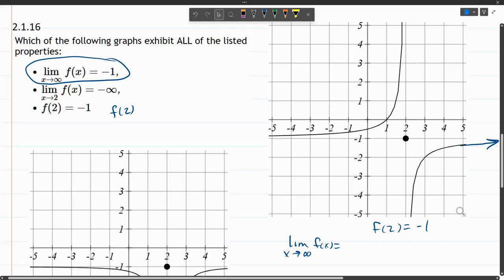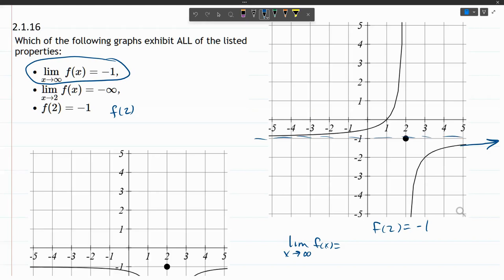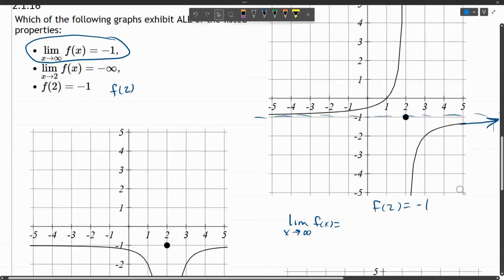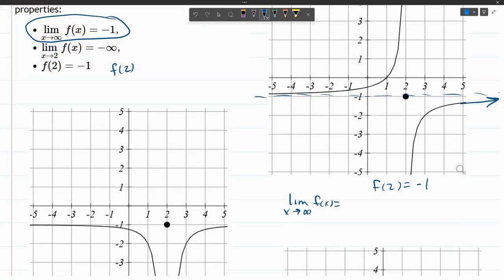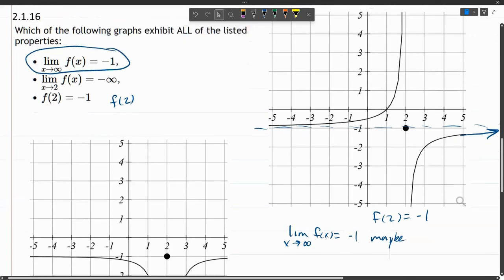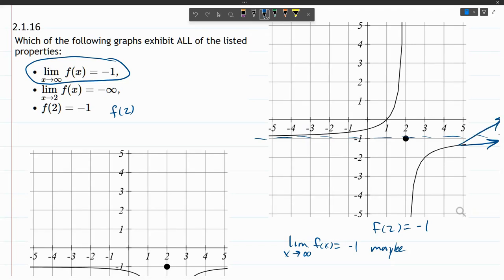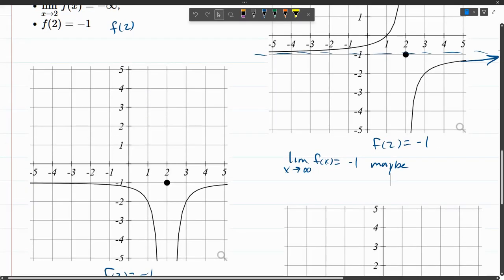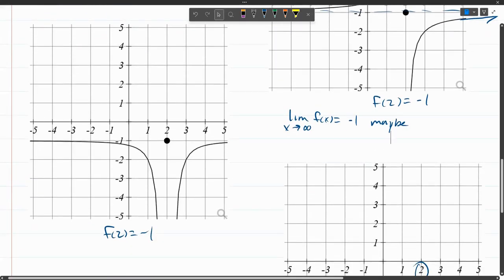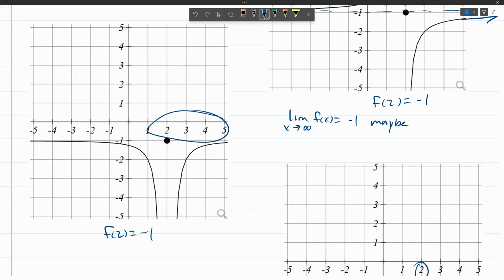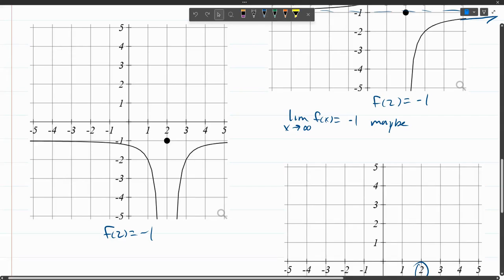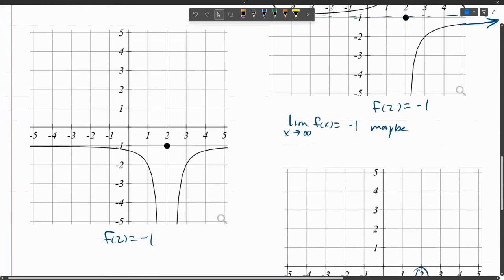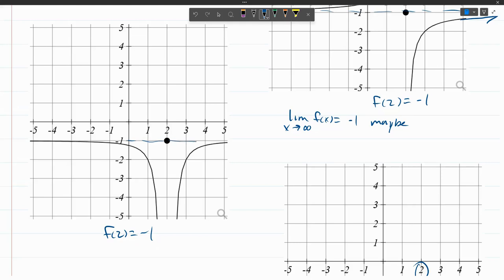This graph could be approaching negative one. There could be a horizontal asymptote here. So this one could be negative one. It's a little hard to tell if it's going to approach negative one, or if maybe it keeps going up and up and up. Next one, this graph here, we're thinking about x values that keep going to the right. And it looks like this has kind of a similar shape as the last graph. This could be approaching this y value of negative one.